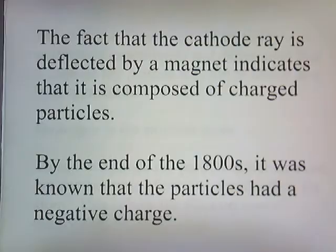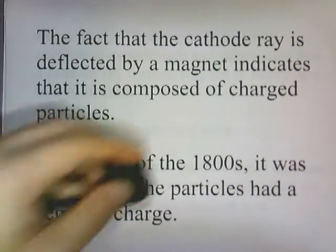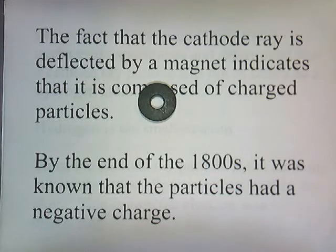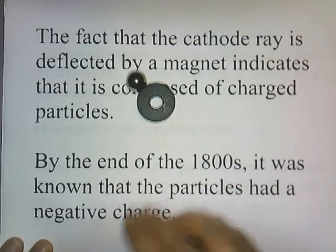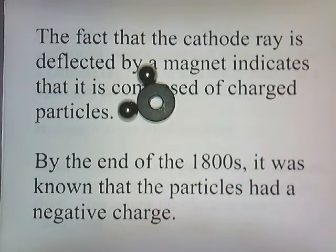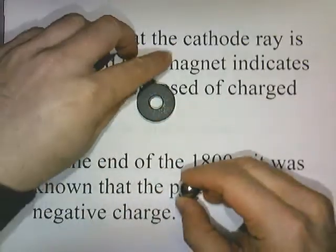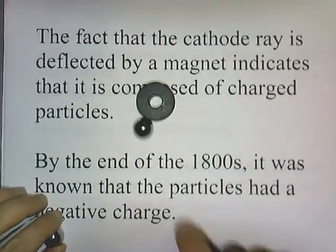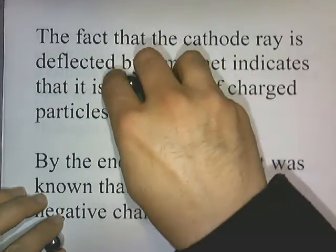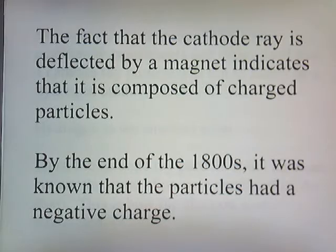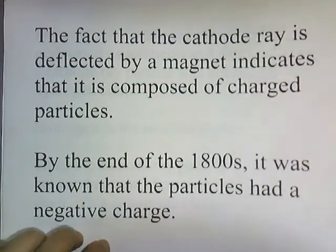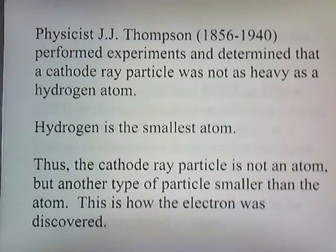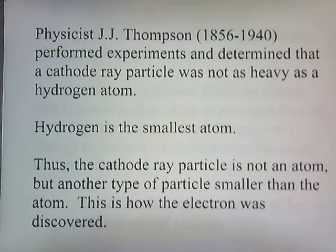The fact that a cathode ray is deflected by a magnet indicates that it's composed of charged particles — in the same way that a magnet can influence the movement of ball bearings, it must mean that cathode rays are also made of particles. By the end of the 1800s, it was known that these particles had a negative charge. Physicist J.J. Thompson performed experiments and determined that the cathode ray particle was not as heavy as the hydrogen atom. Since hydrogen is the smallest atom, the cathode ray particle is not an atom but another type of particle smaller than the atom. This is how the electron was discovered.